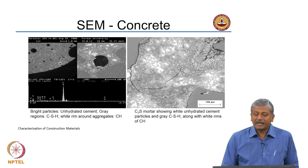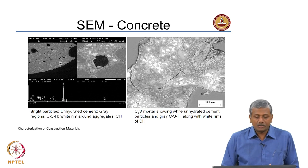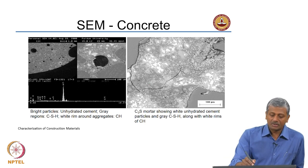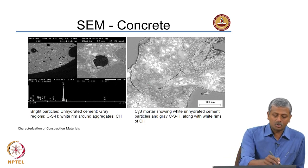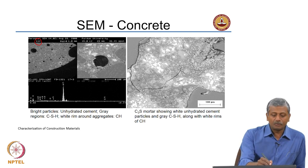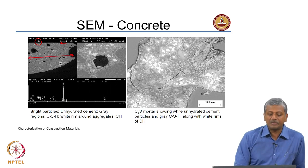These are backscattered images taken from mortars, not really concrete mortar — there is no coarse aggregate in this case. This is a much lower magnification image on the left side, taken at only 11x magnification, meaning the field of view width corresponds to 1 millimetre. So this entire field of view is probably about 10 millimetres or so.